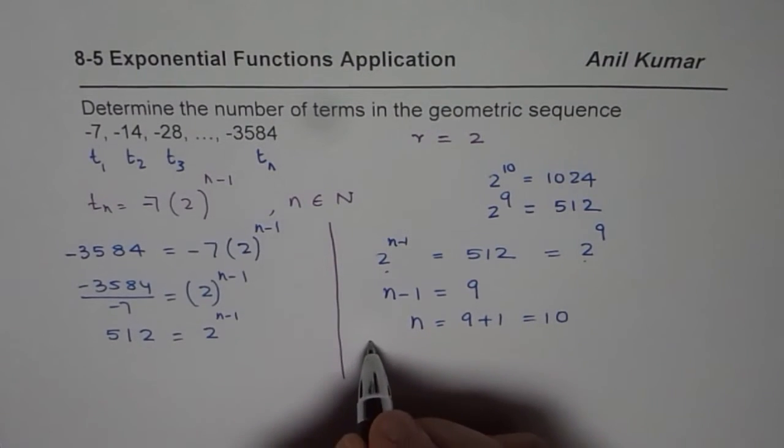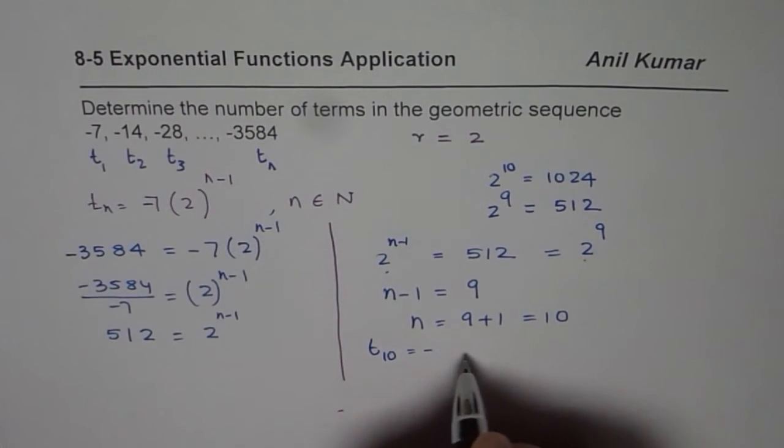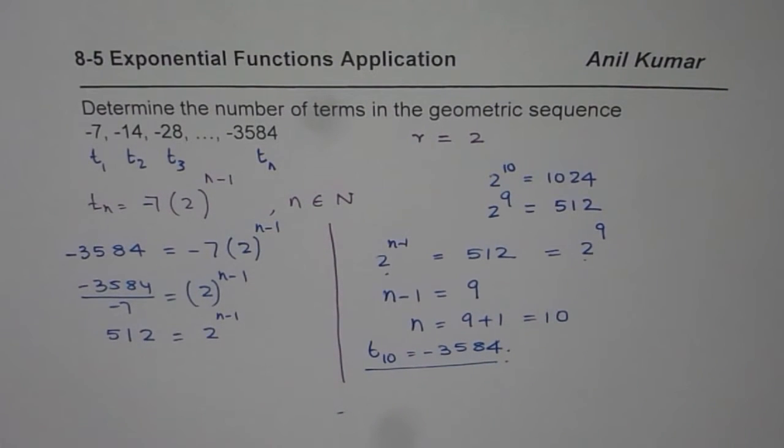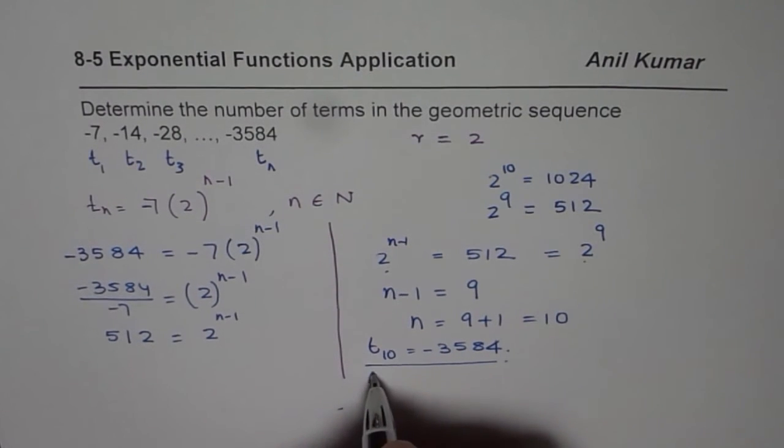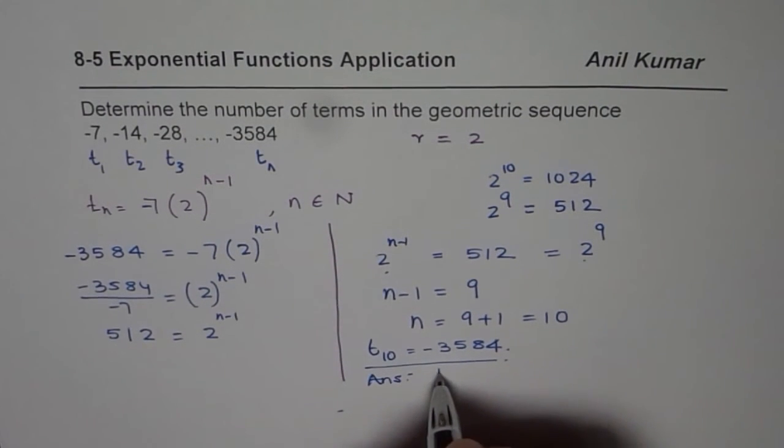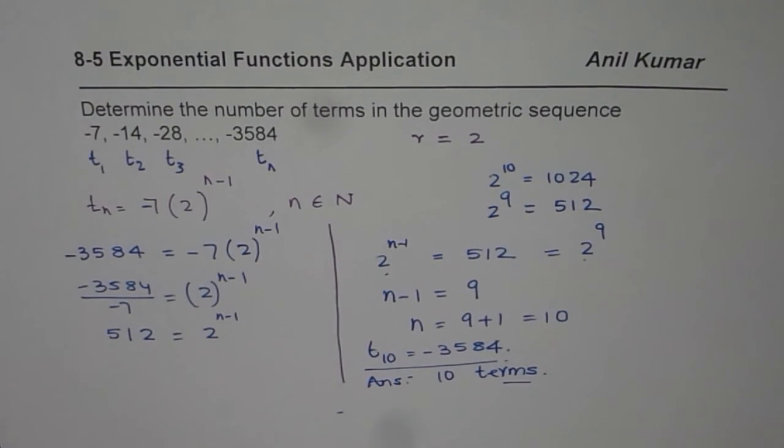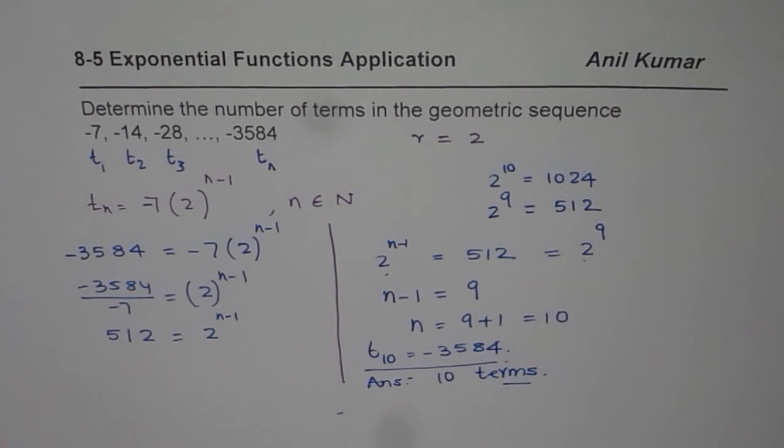So that means the 10th term is minus 3584. So that is the answer. Determine the number of terms in the geometric sequence. The answer is there are 10 terms. So that is how we can solve such equations. I hope you enjoyed the solution. Thank you and all the best.